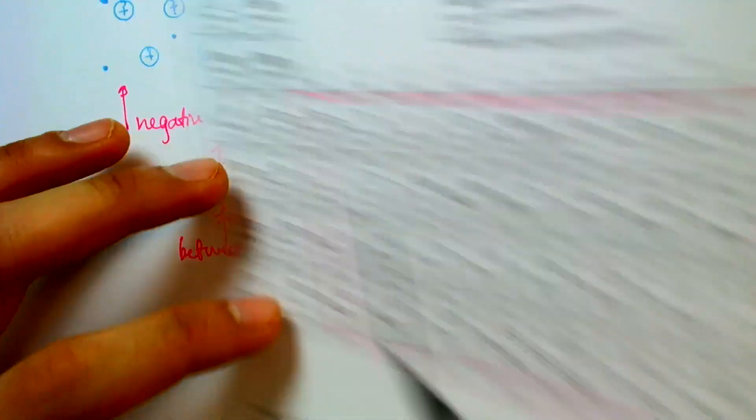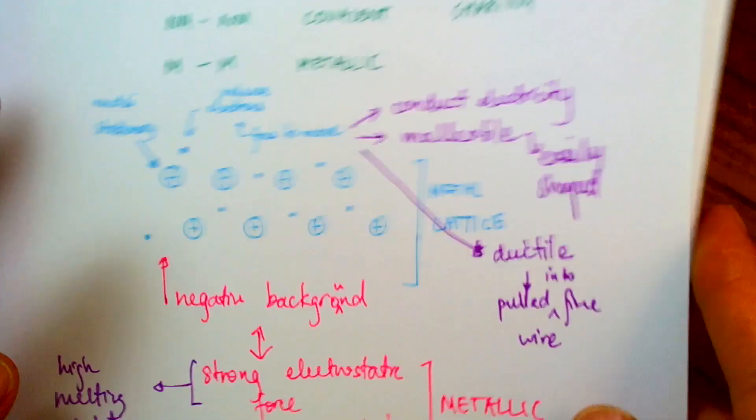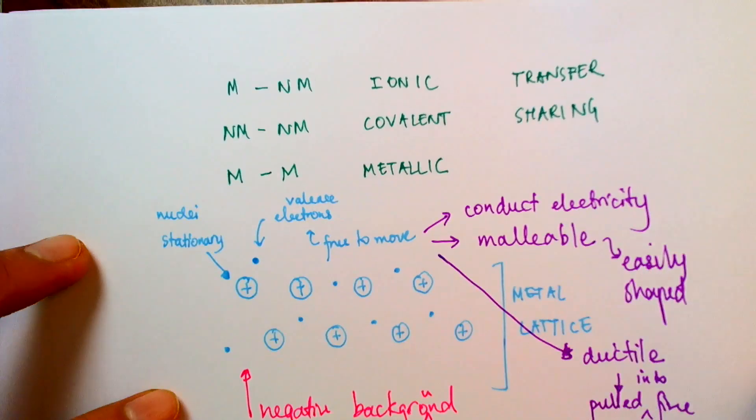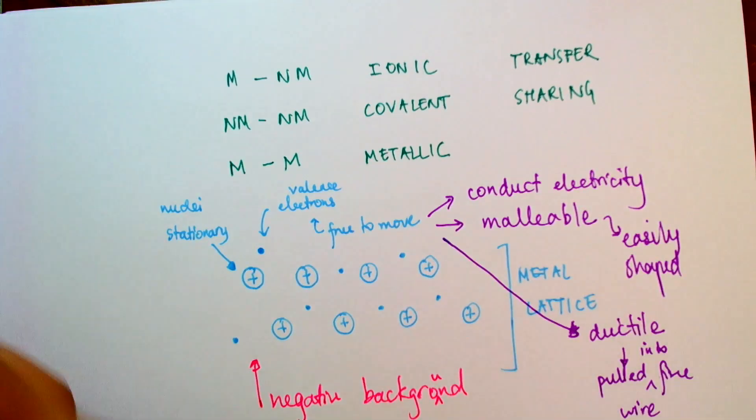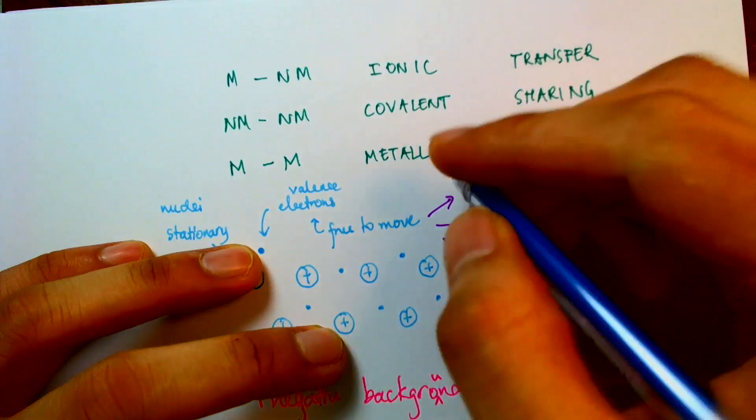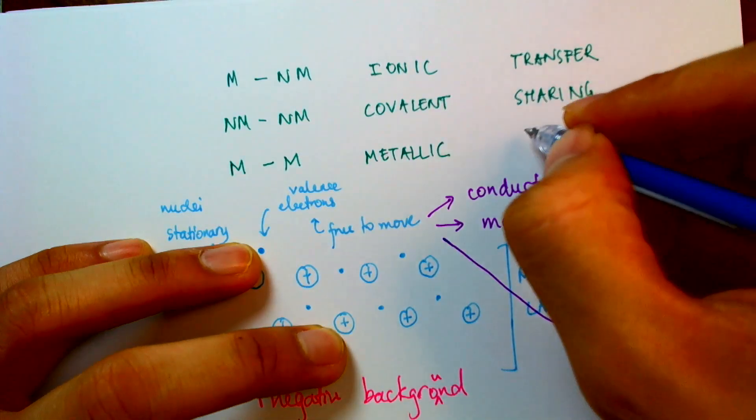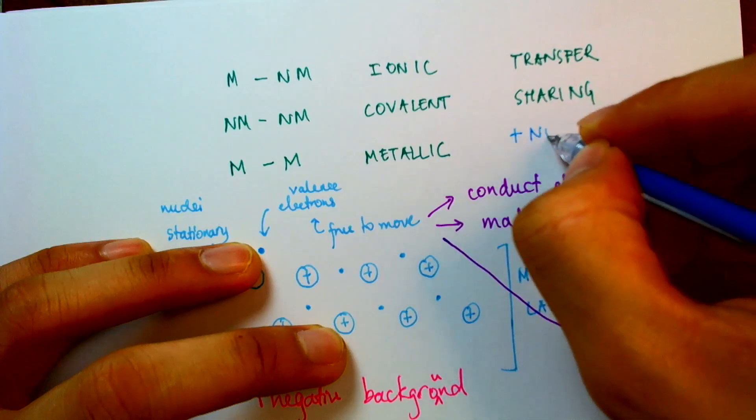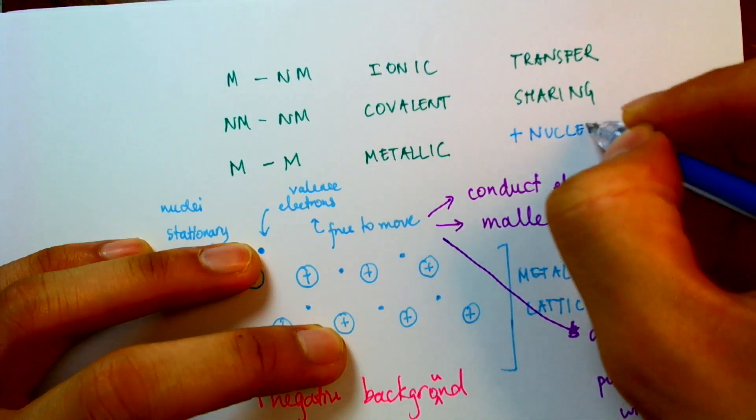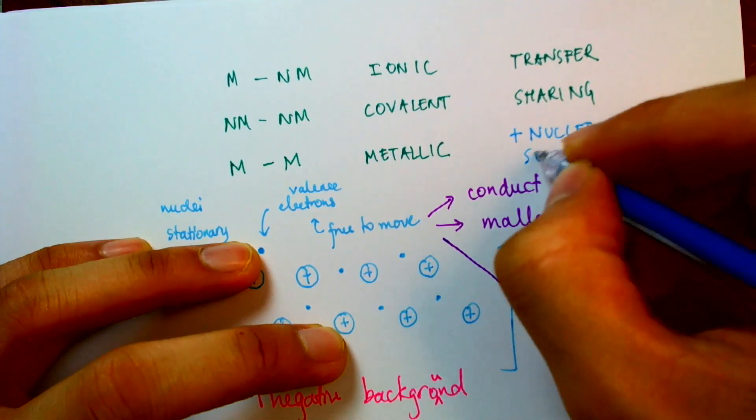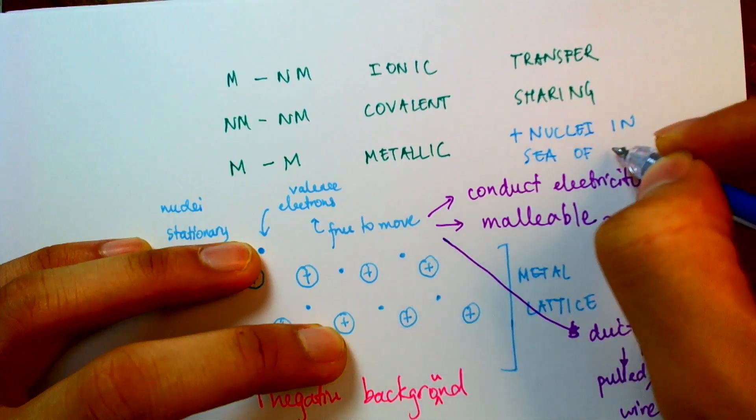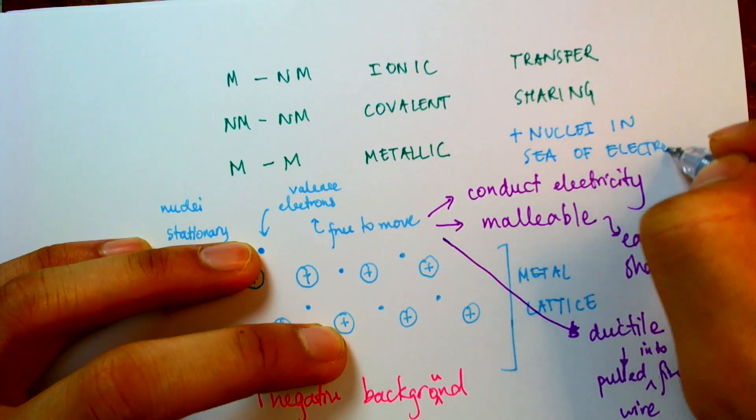So now I can complete my table of comparison between these three types of categories. So in a metallic bond, I have positive nuclei in a sea of electrons.